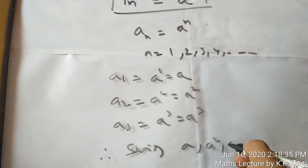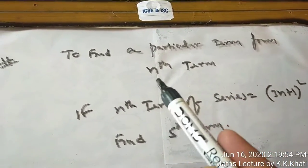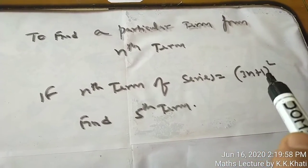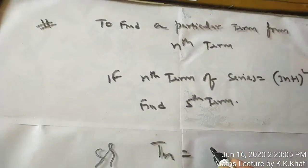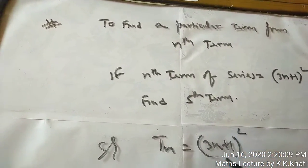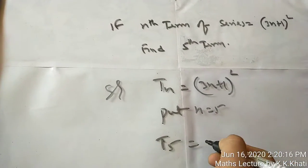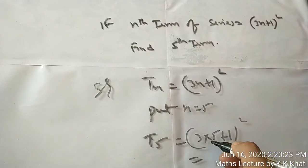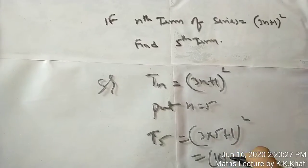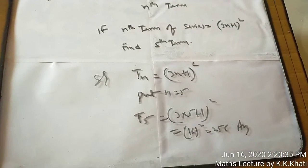Now if we have to find a particular term from the nth term formula, see this example. The nth term is given as (3n + 1) whole square, and we need to find the fifth term. Solution: Tn is given as (3n + 1)². Therefore, T5, we put n equals 5 because fifth term is asked. So 3 into 5 plus 1 whole square equals 15 plus 1 equals 16, and 16 whole square is 256. This is our answer.